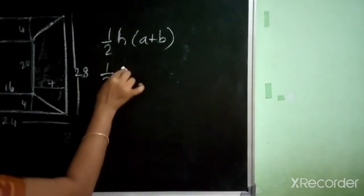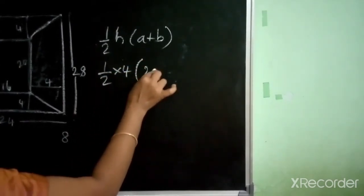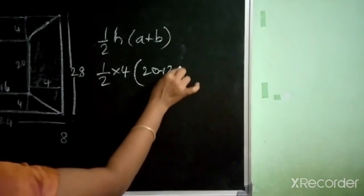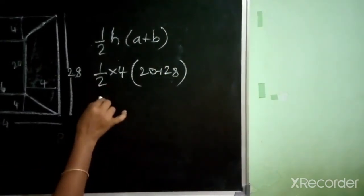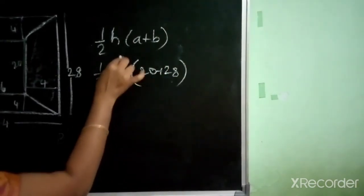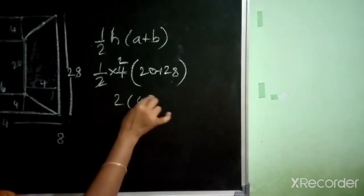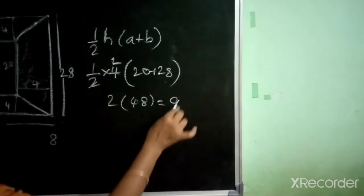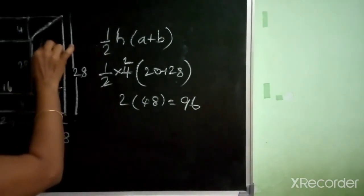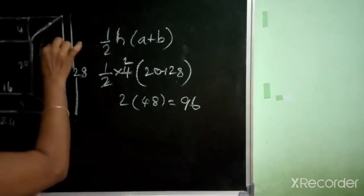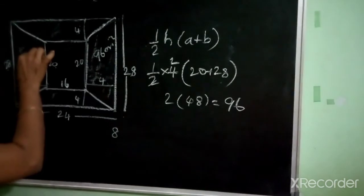So, half into 4 into (20 plus 28). That gives half into 4 into 48, which equals 96 cm². This is the area of the top and bottom trapezoids — 96 cm² each.